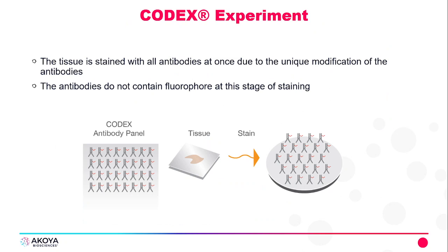The tissue is stained with all of the antibodies at once, because we have a cocktail of DNA barcoded primary antibodies, so there's no issue of cross-reactivity. This cocktail is stained on the tissue and the antibodies are fixed, so they will not be removed.